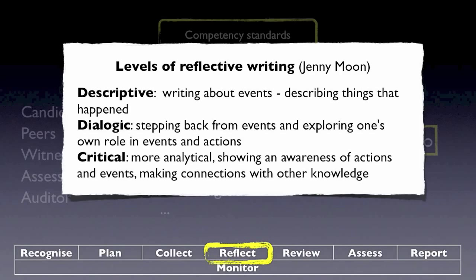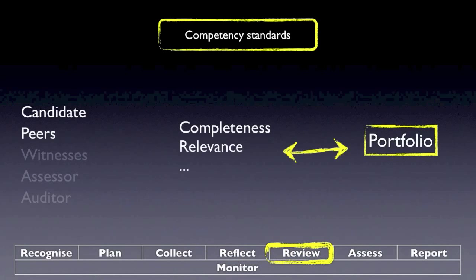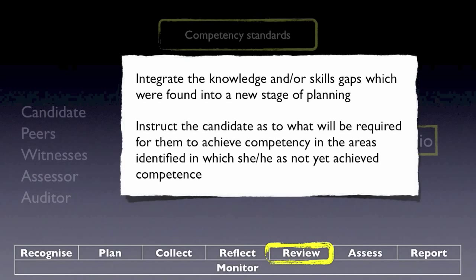By reading these reflections and looking at the kind of evidence collected, you make sense of this information. Then comes the review stage, where the candidate checks that the portfolio is complete and that all the evidence is relevant to what has been required. Any knowledge or skills gaps found are integrated into a new stage of planning, and the candidate is instructed on what will be required to achieve competency in the areas where they have not yet achieved competence.